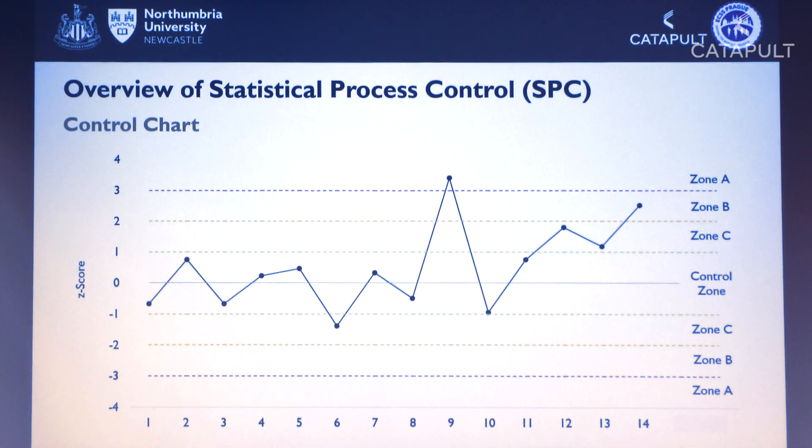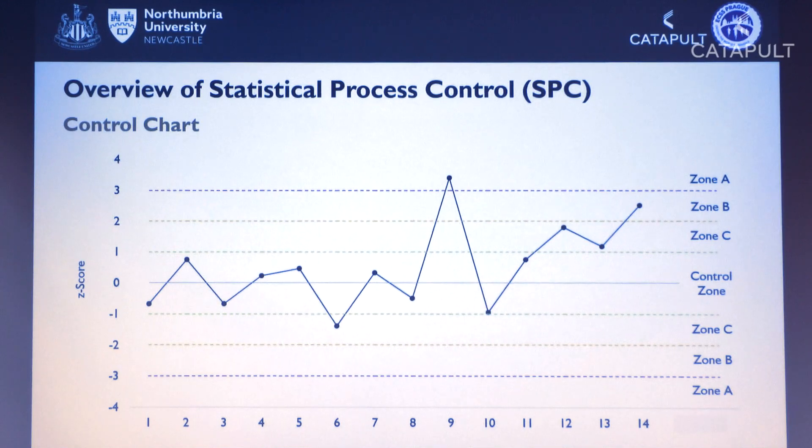Statistical process control evolves around the control chart and the rules around it. This is something you'd typically see in a Google search or in the literature — it's how to analyze time series data. On a daily basis new data comes into the system, and we're trying to see when an athlete falls outside certain ranges. Historically that's been done with z-scores: we get a mean and standard deviation, see where a new data point lies, and set different control limits — zone C is one standard deviation, up to two or three standard deviations.